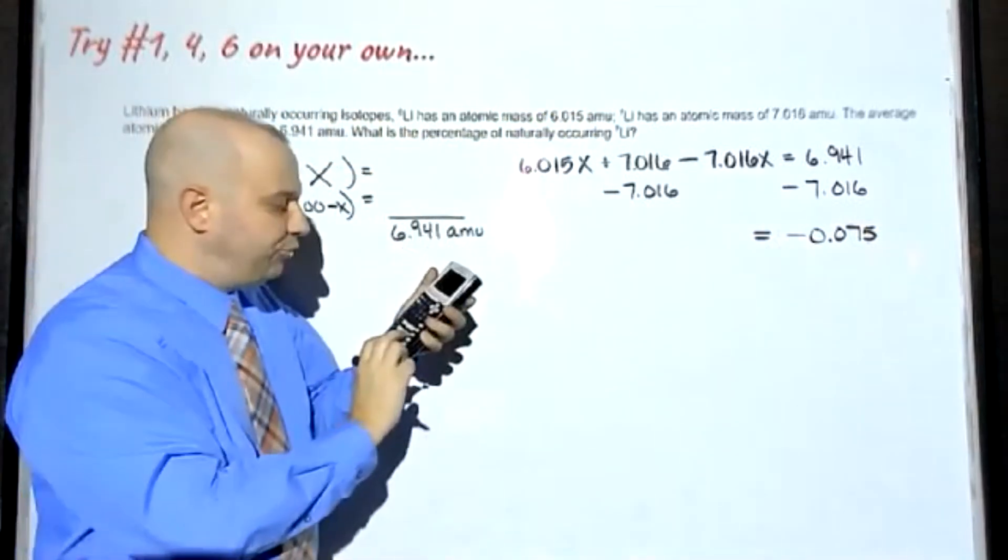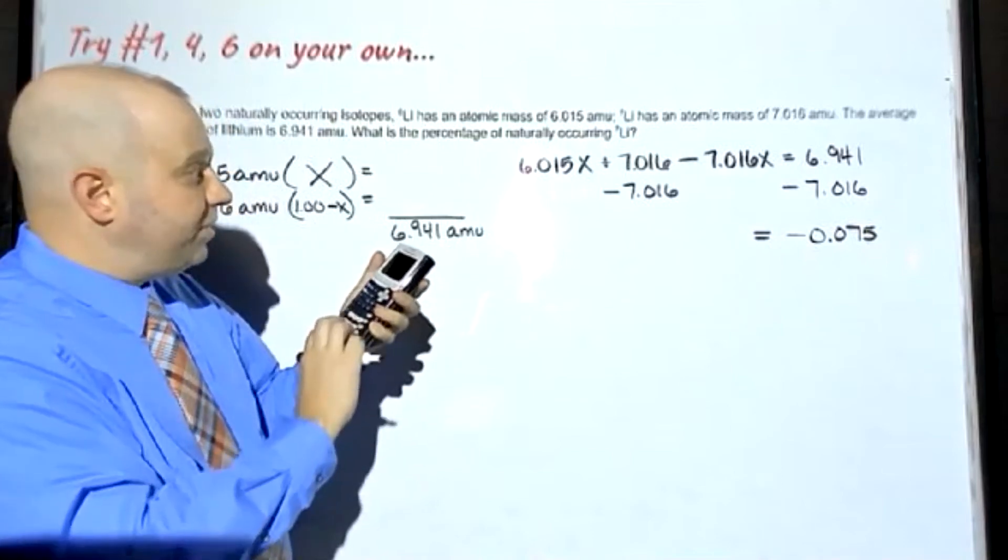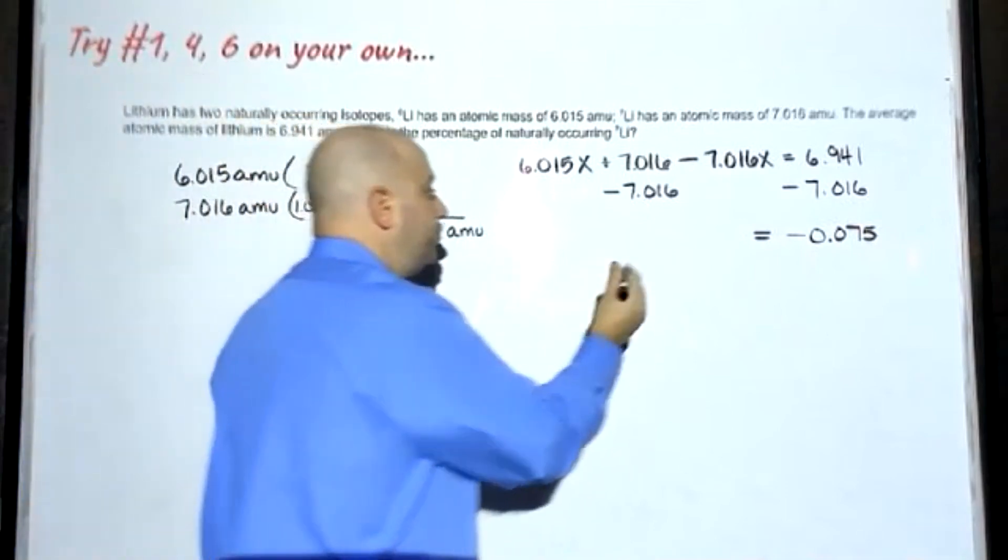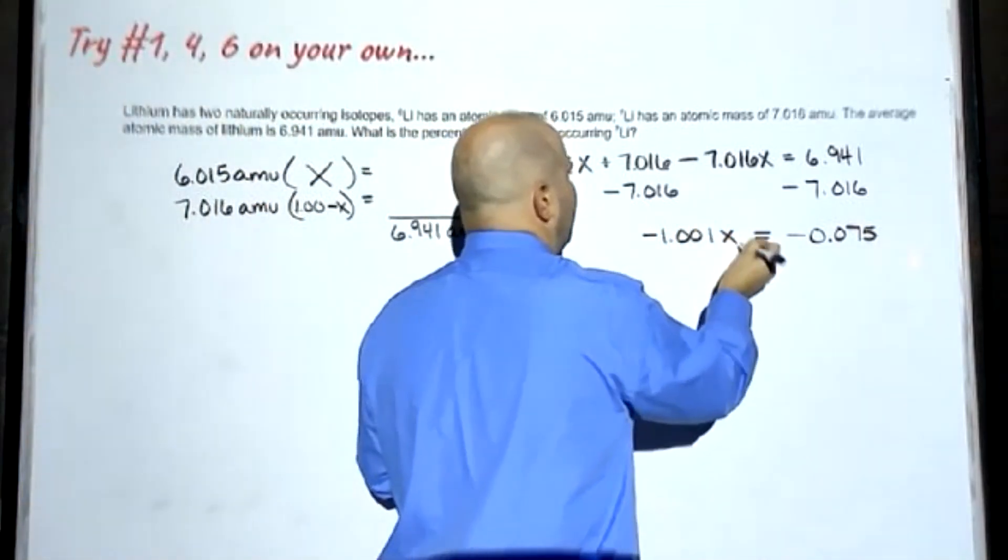And I'm going to combine my two X terms. So 6.015 minus 7.016 turns out to be negative 1.001X.